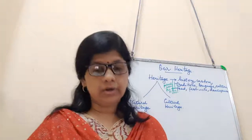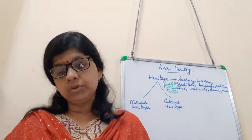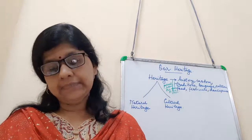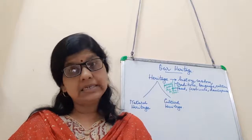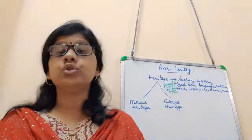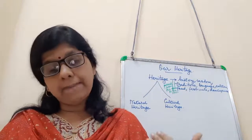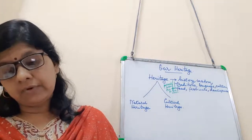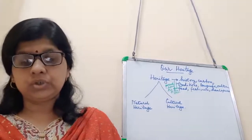Let us read what is there in your book. There are many things that once belonged to people of earlier generations and now have been passed down to us. These include our customs, traditions, festivals, buildings, art forms such as dance and music, paintings, costumes, handicrafts, food, pottery, coins, etc. All these are part of our rich culture and have come down to us from people who lived before us.